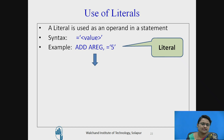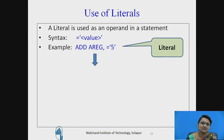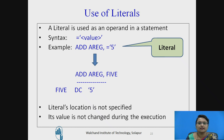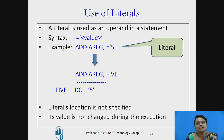A literal is used as an operand in a statement — we call it an immediate value specified directly in the operand of an instruction. Consider the instruction 'ADD AREG, =5': here 5 is a literal. The assembler converts this by automatically creating a Declare Constant with value 5. However, since the literal's location is not specified by the programmer, it is protected by the assembler and its value cannot be changed during execution.